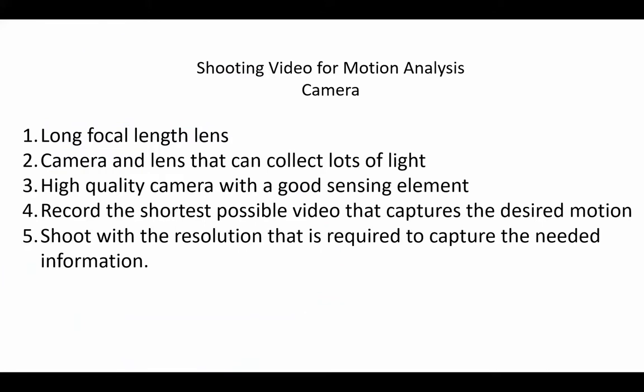Here are some quick tips on selection of the camera to shoot the motion of the object. One, use the longest focal length lens that you can for capturing the motion. Two, using a camera that can collect lots of light will minimize the integration time, and for cameras that allow it, will allow you to increase the shutter speed.